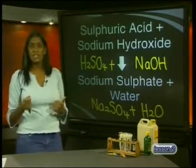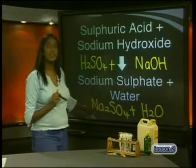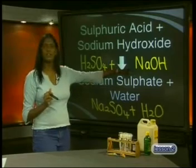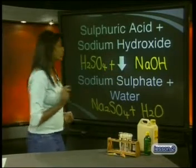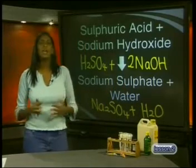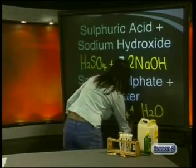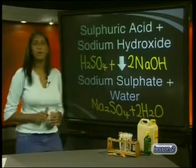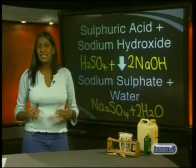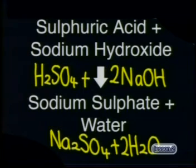We need to check if this equation is balanced. There are two sodium atoms in the product but only one in the reactants. To balance this, we add a 2 in front of the NaOH. Now we balance the hydrogen and oxygen atoms by placing a 2 in front of H2O. So the balanced equation is: H2SO4 plus 2NaOH react to form Na2SO4 plus 2H2O.